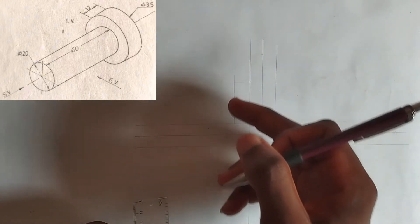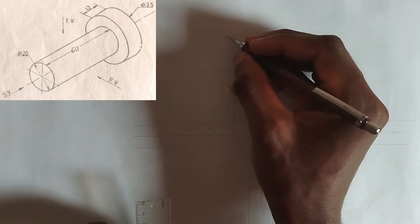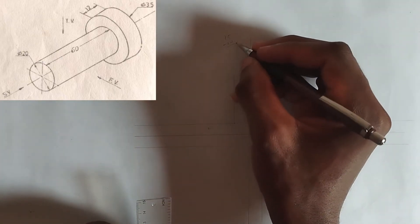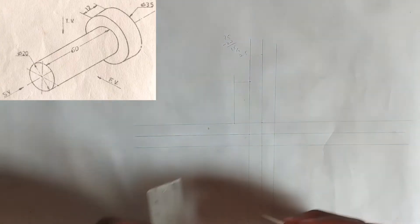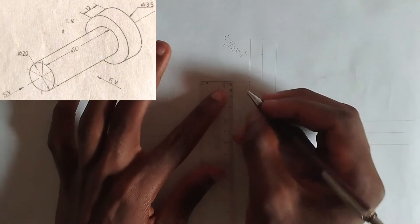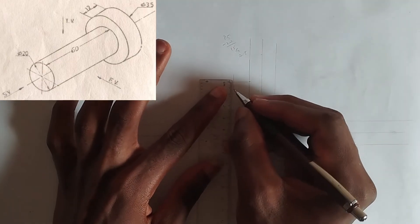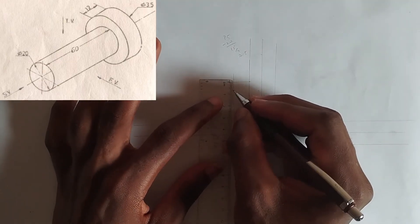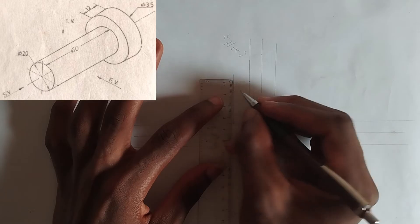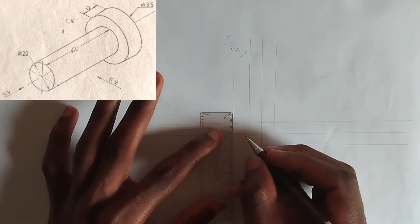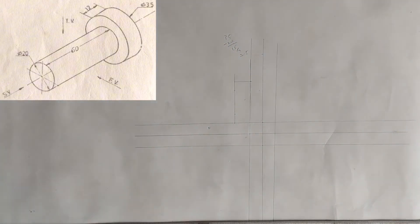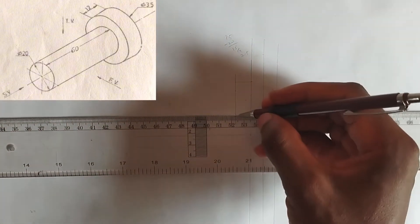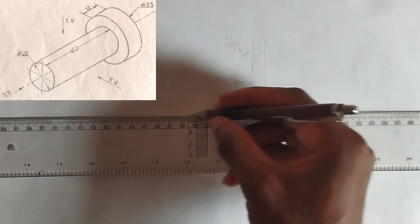So definitely, for it to be at the center, 35 minus 20, which is going to be 15. Then 15 divided by 2 is going to be 7.5. So I'm going to be picking 0.75 centimeters from each edge like this. Then I'll pick another 0.75 from this particular place. So using those lines I picked, I'll draw a straight line like this.